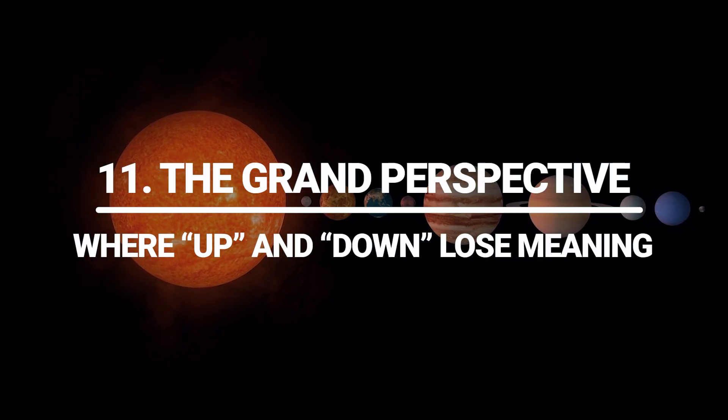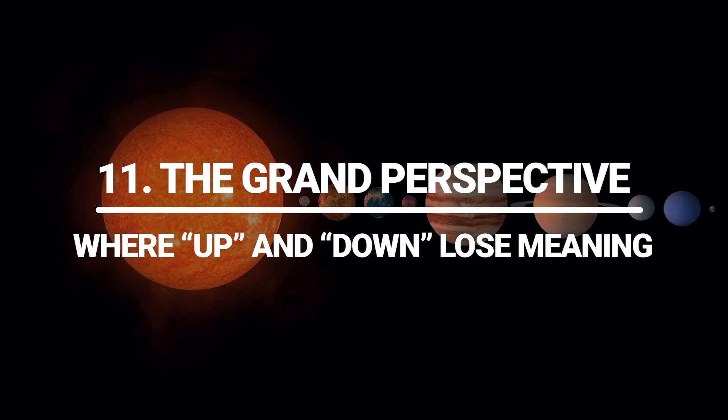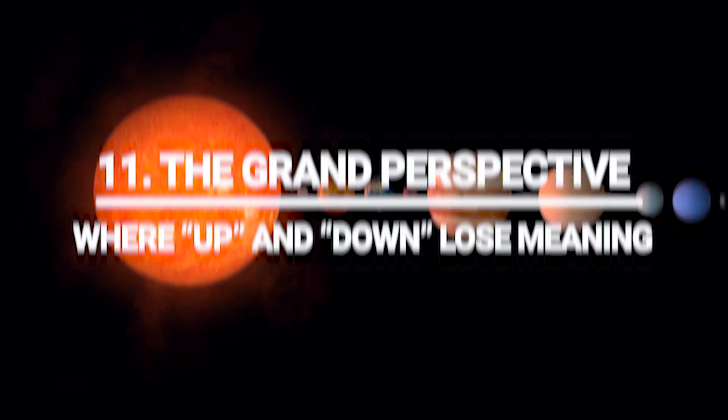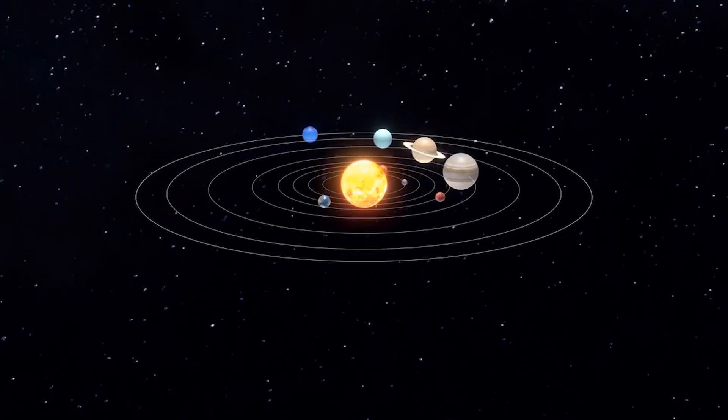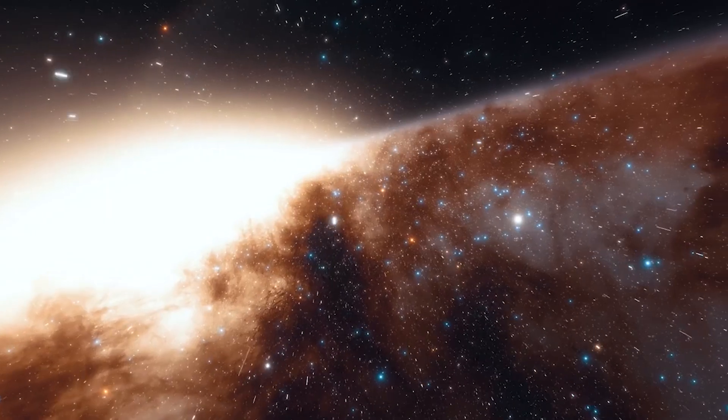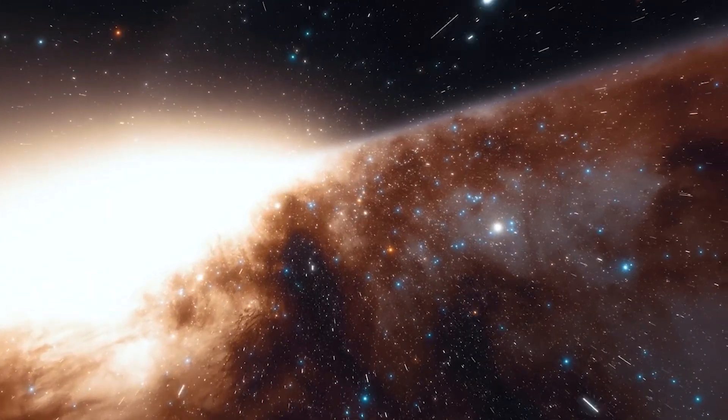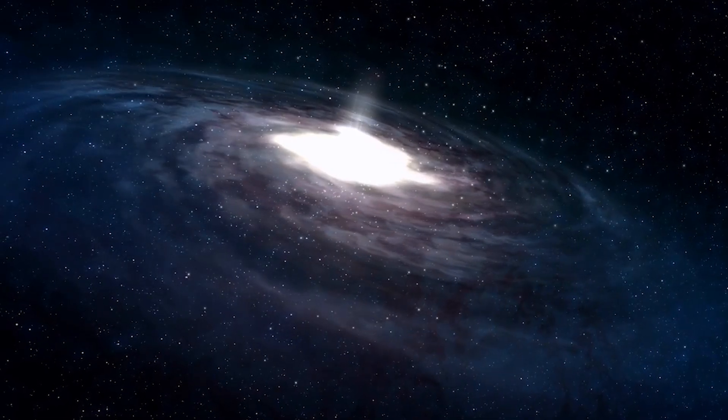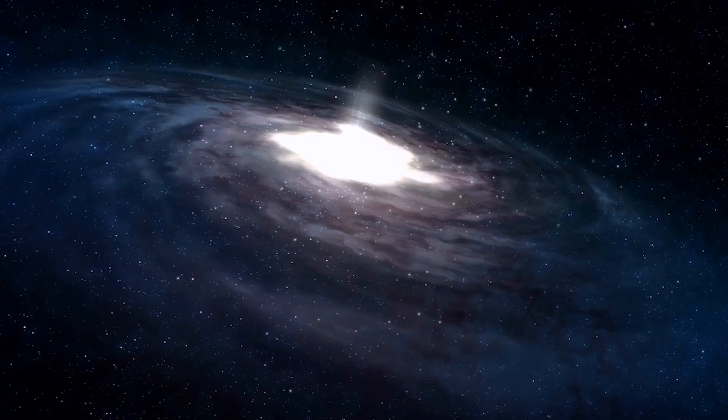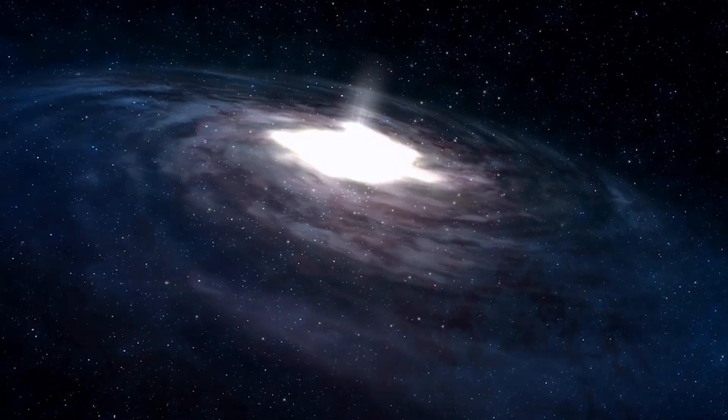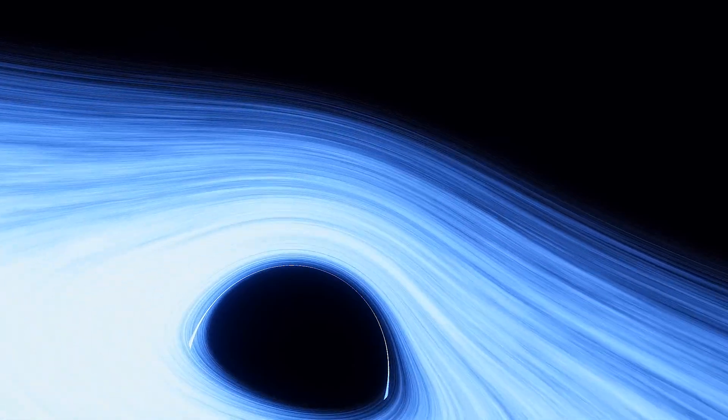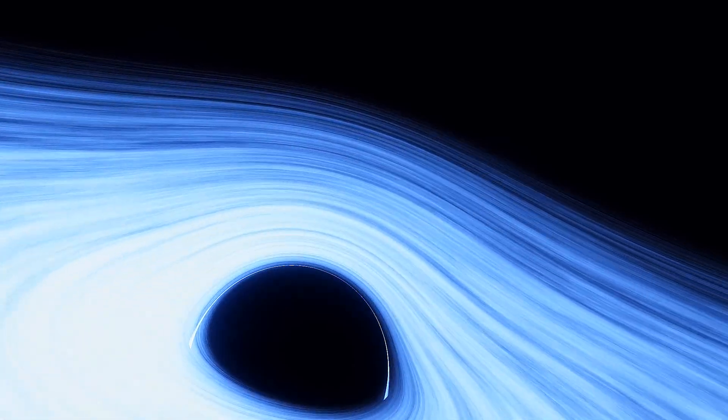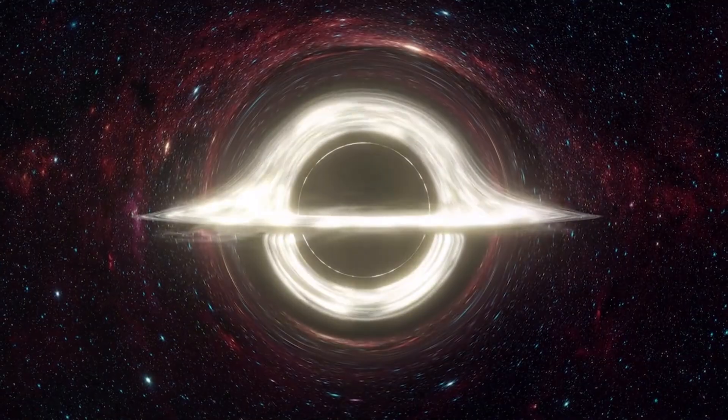The grand perspective, where up and down lose meaning. Picture the solar system as a grain of pollen adrift in a sunlit room. The light shaft is the Milky Way's disk, glittering with stars. Above and below that shaft, motes swim in turbulence too faint to see unless you squint. Dark matter, halo stars, rogue planets, clouds of plasma. Some motes fall back, others drift away forever.